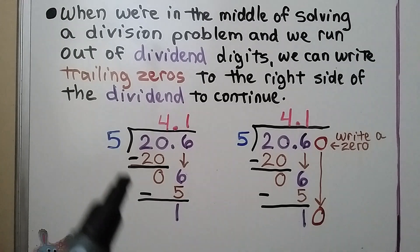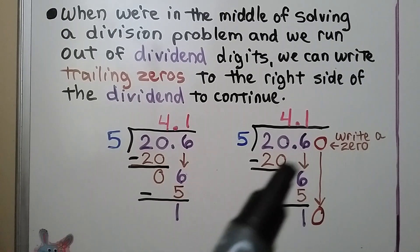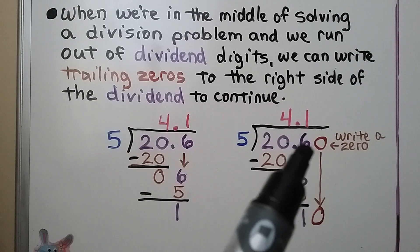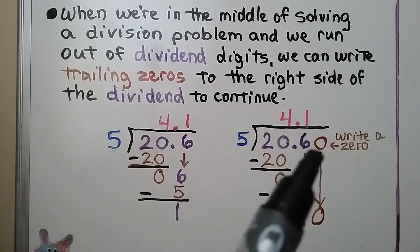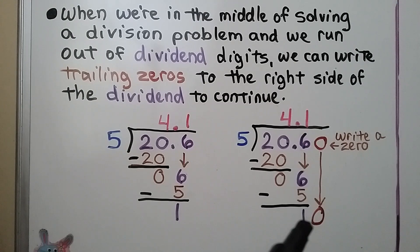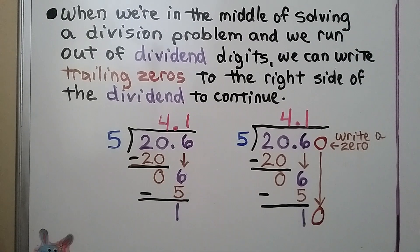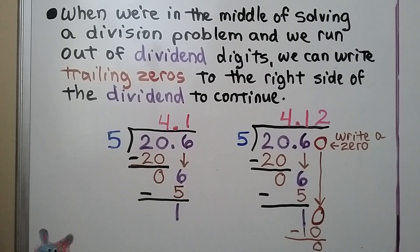We can't divide anymore because 5 won't fit into 1. But if we write a zero to the right side here in the hundredths place, we can drop it down and ask ourselves how many times 5 can fit into 10. That would be two times. We write a two in the hundredths place for the quotient, and we get a remainder of zero. By writing a zero to the right of our dividend, we were able to continue dividing until we had a zero remainder.